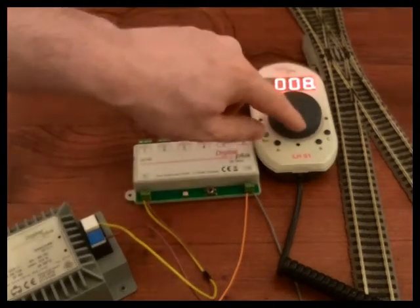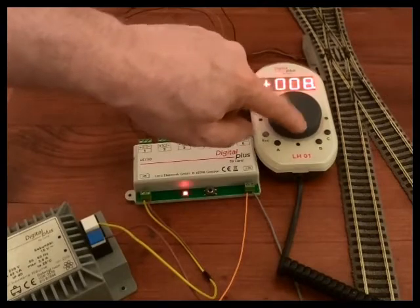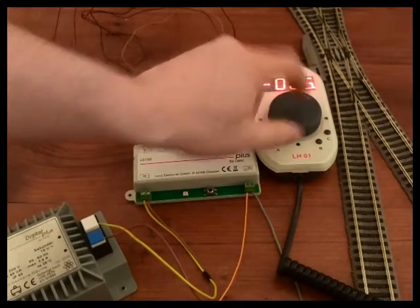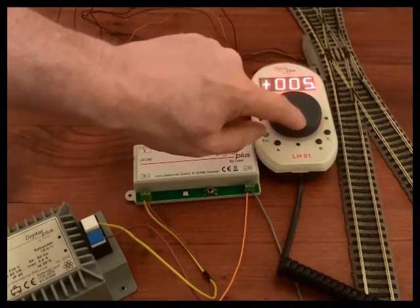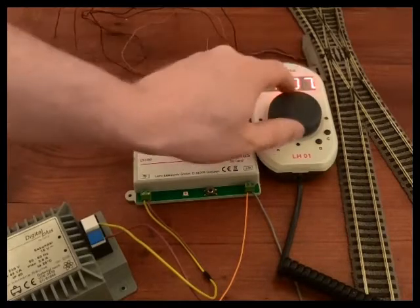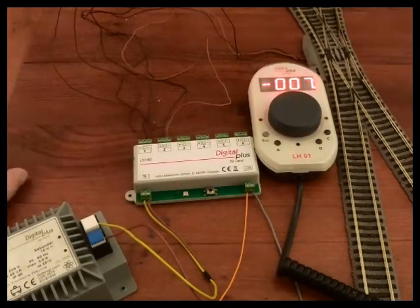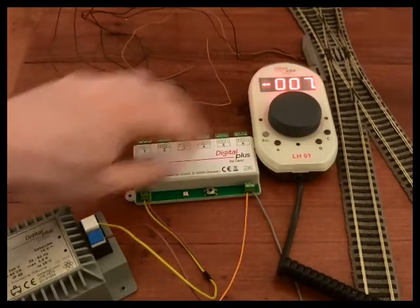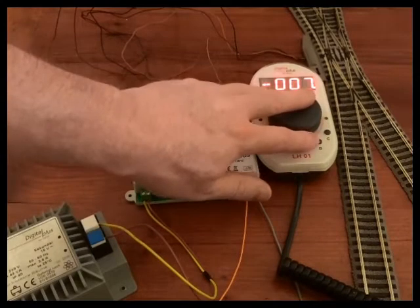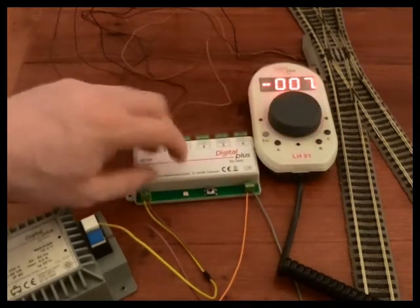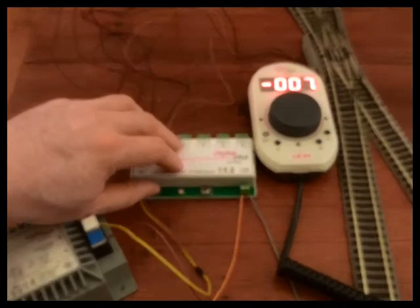As it receives a command that it's programmed for it will flash, other commands it will ignore. So it only responds to those that it's programmed for. And this LH01 system will handle up to 999 points if you needed to.